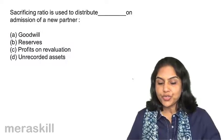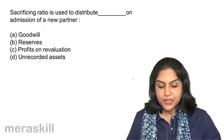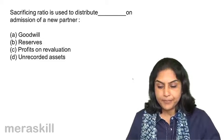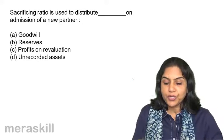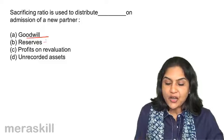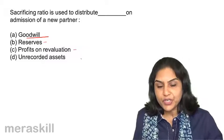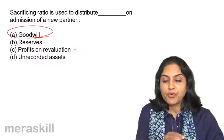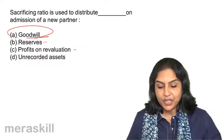Sacrificing ratio is used to distribute blank on admission of a new partner. A. Goodwill. B. Reserves. C. Profit on revaluation. D. Unrecorded assets. Reserves and profit on revaluation will go to the revaluation account and to the old partners in old ratio. Only goodwill — the share of goodwill of the new partner — will be credited to the old partners in their sacrificing ratio. Correct answer: A, goodwill.